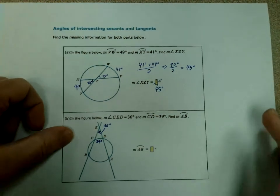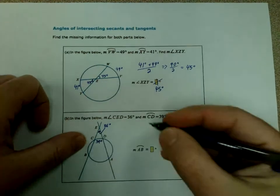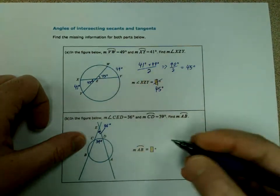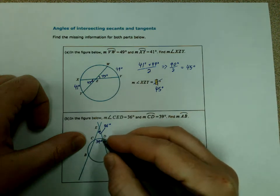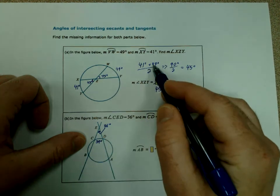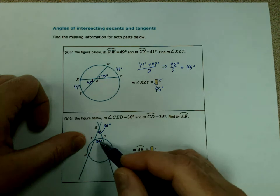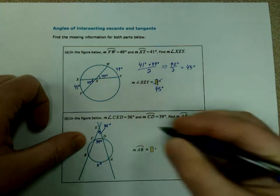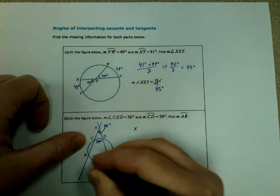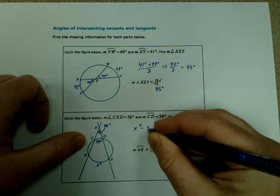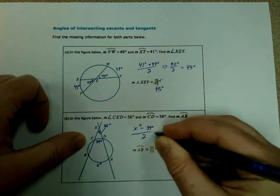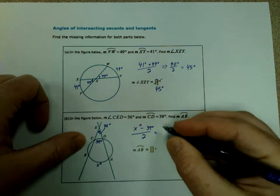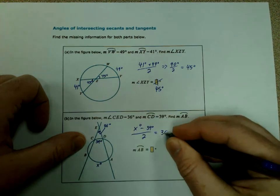So this one, since it's outside, instead of going arc plus arc divided by 2, we're going to do arc minus arc divided by 2. So I'm going to go ahead and call this one x degrees. So this is bigger because it's further away. So it's x degrees minus 39 degrees divided by 2 equals our angle measurement, which is 36 degrees.